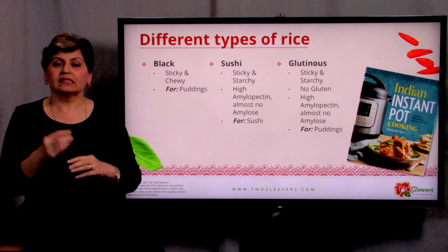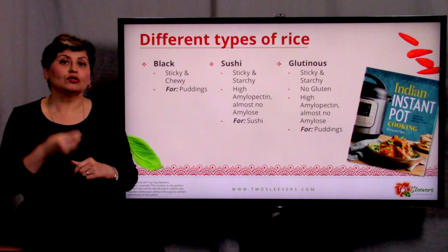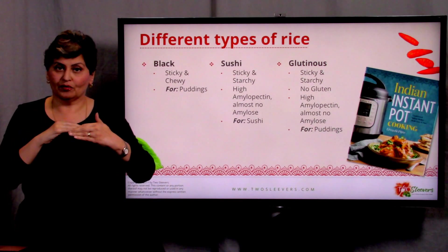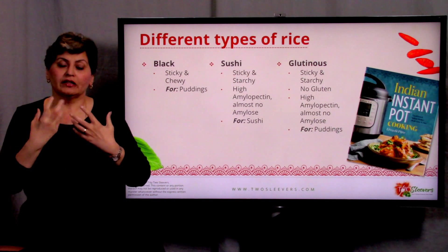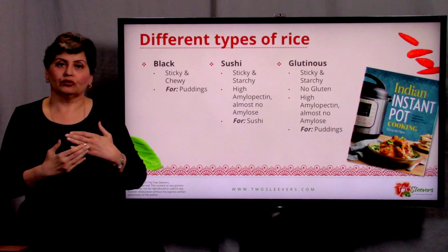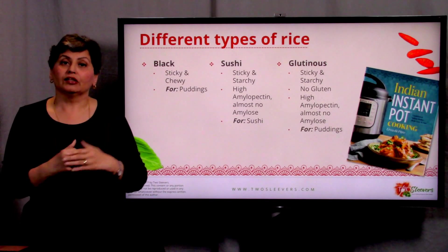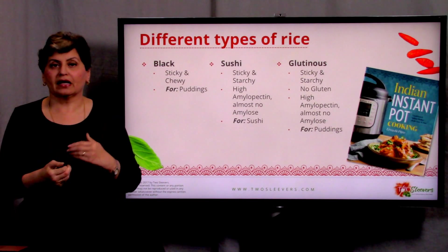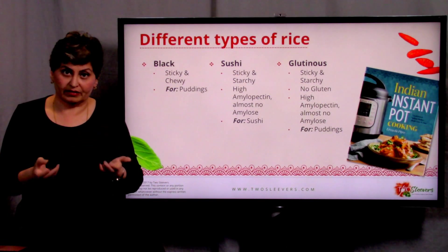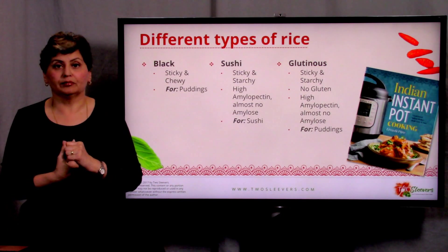Sushi rice is very sticky and very starchy. Remember, basmati has high amylose and low amylopectin — sushi rice is the other way around, so it has more starch that your body's going to absorb. In terms of raising your blood sugar and insulin levels, the stickier the rice, the more likely it is to raise them. So a basmati or a separate long grain rice will raise your blood sugar less so than a stickier rice.